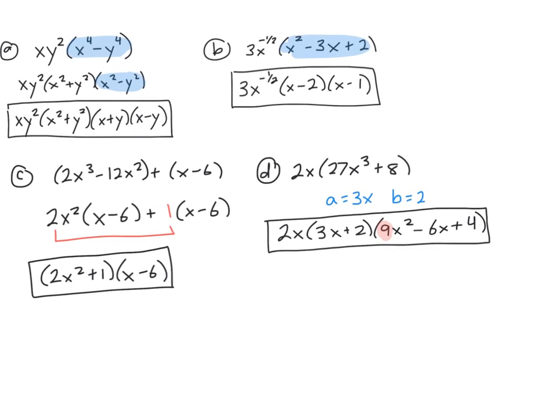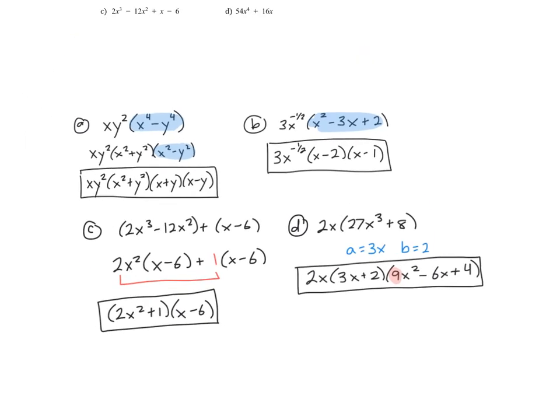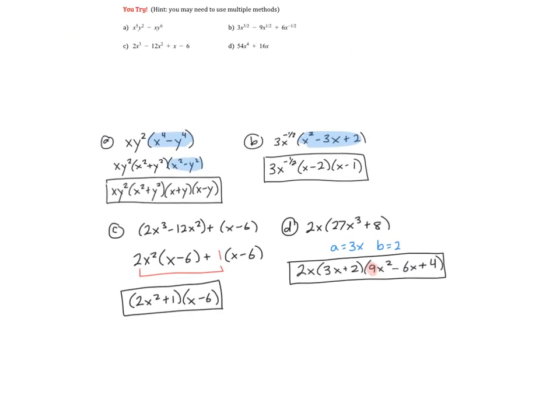And the last one, first you have to do GCF, which was 2x. Your remaining binomial is actually a sum of two cubes problems. So using your a and b values, plug those into the formula I gave you. Just watch this term. Remember, this term is a squared, so you have to square the 3 along with the x. All right, that is all for your factoring review. Thanks for watching!